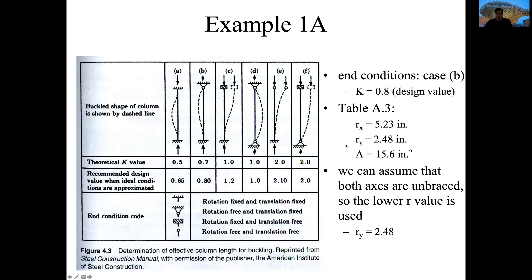First, we go to the tables and look for our end condition case. In our case, the superior part is pinned and the inferior part is fixed — that is Case B. We look at the recommended design value, not the theoretical value, and for Case B the recommended K value is 0.80.